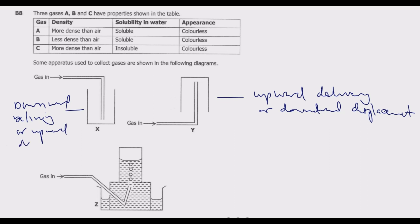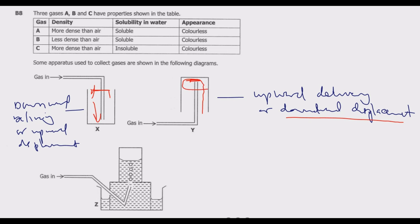With the upward displacement method, what is happening is that you are displacing the air upward — the air is going up — such that the denser gas is coming down. According to downward displacement, the less dense gas is entering and taking up the upper part, then the denser air is coming down and taking up the lower place. That's why it's called that.